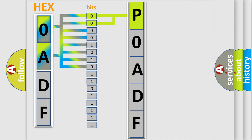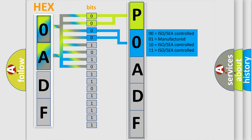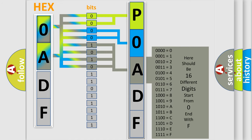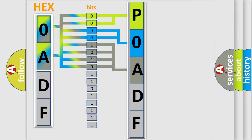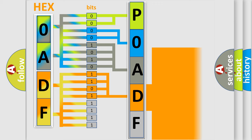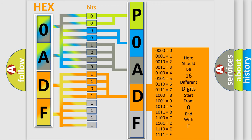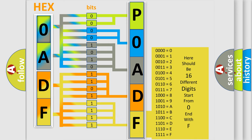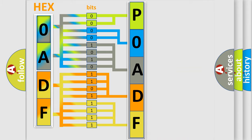The next two bits again determine the second character. The last bit styles of the first byte define the third character of the code. The second byte is composed of a combination of eight bits. The first four bits determine the fourth character of the code, and the combination of the last four bits defines the fifth character. A single byte conceals 256 possible combinations.